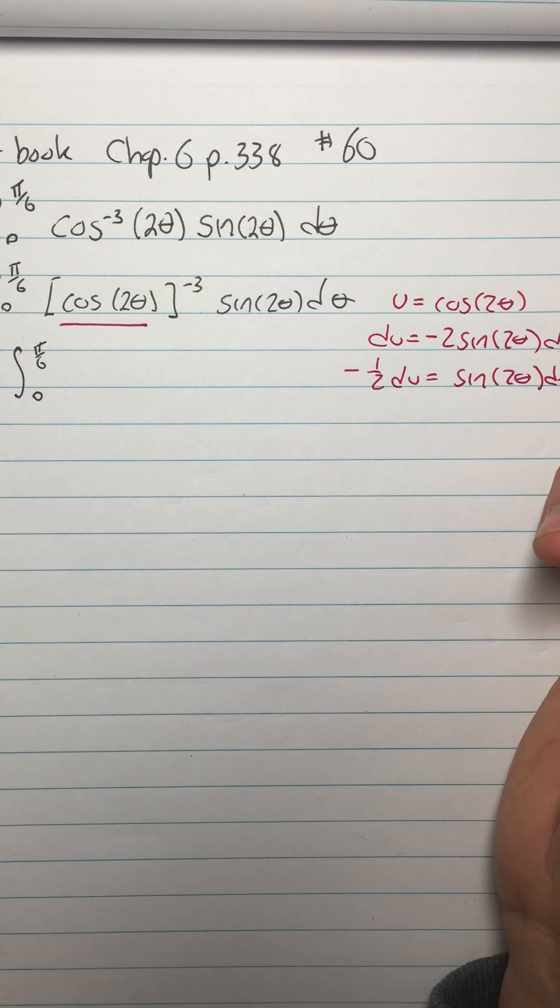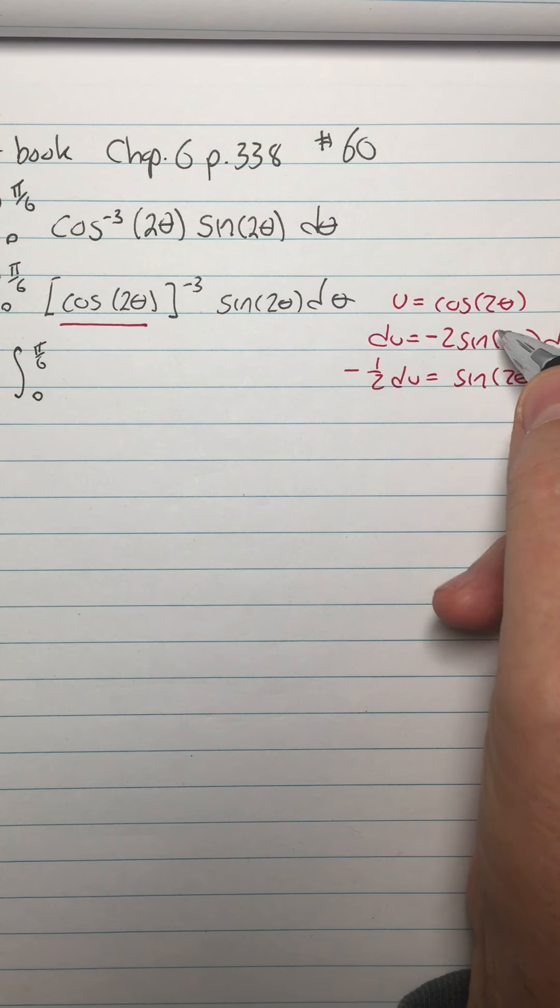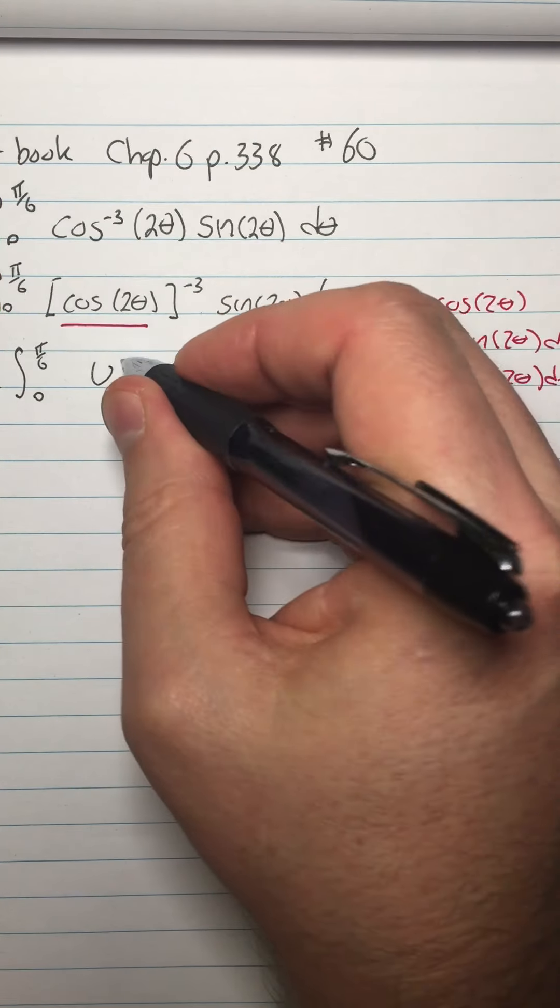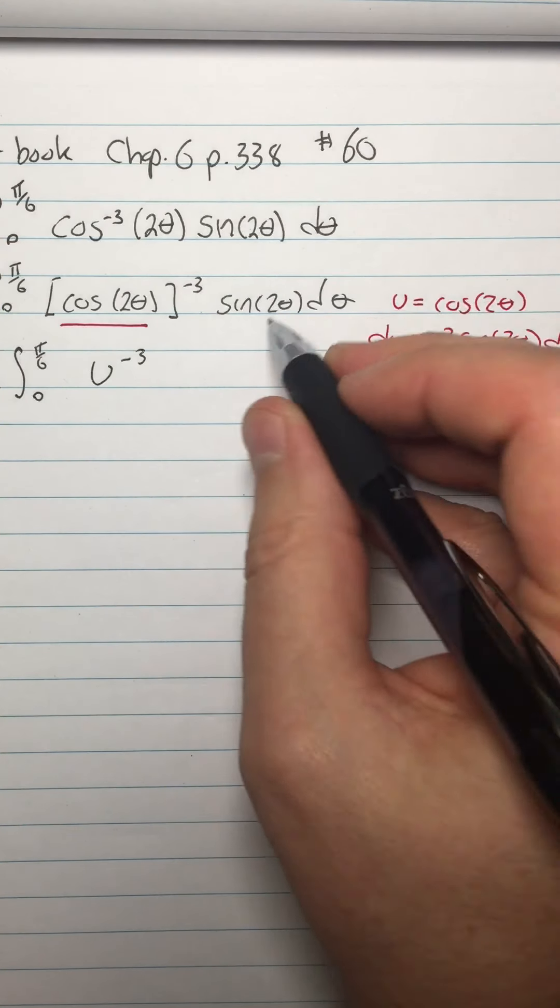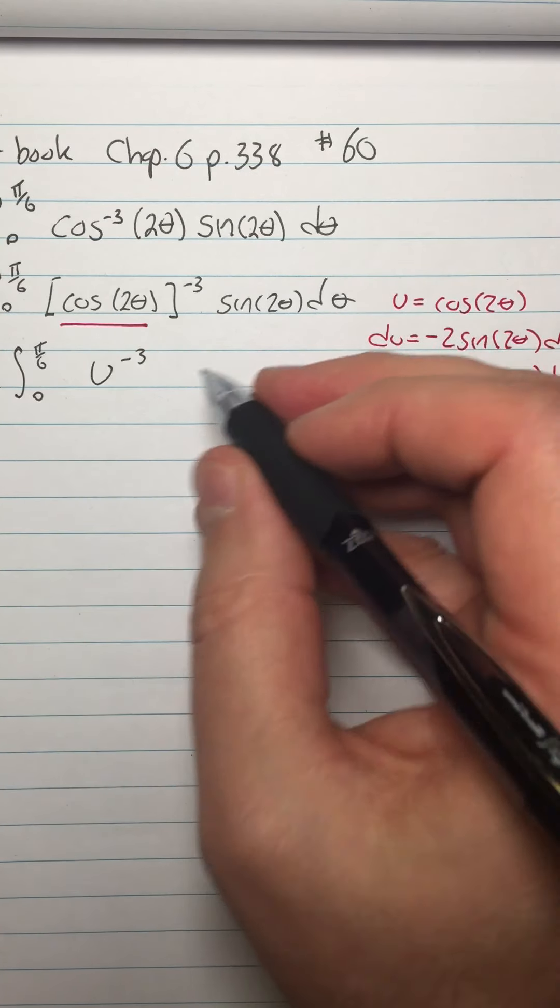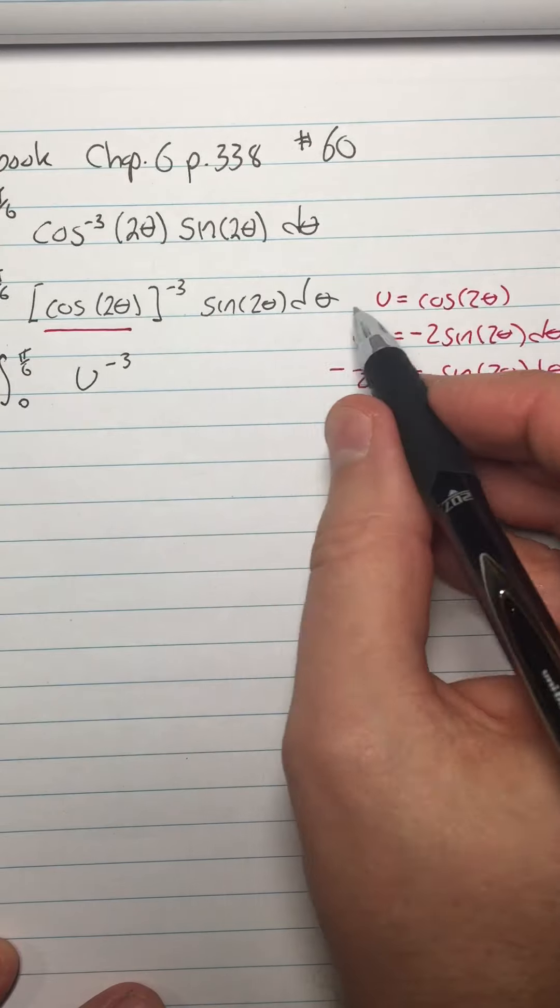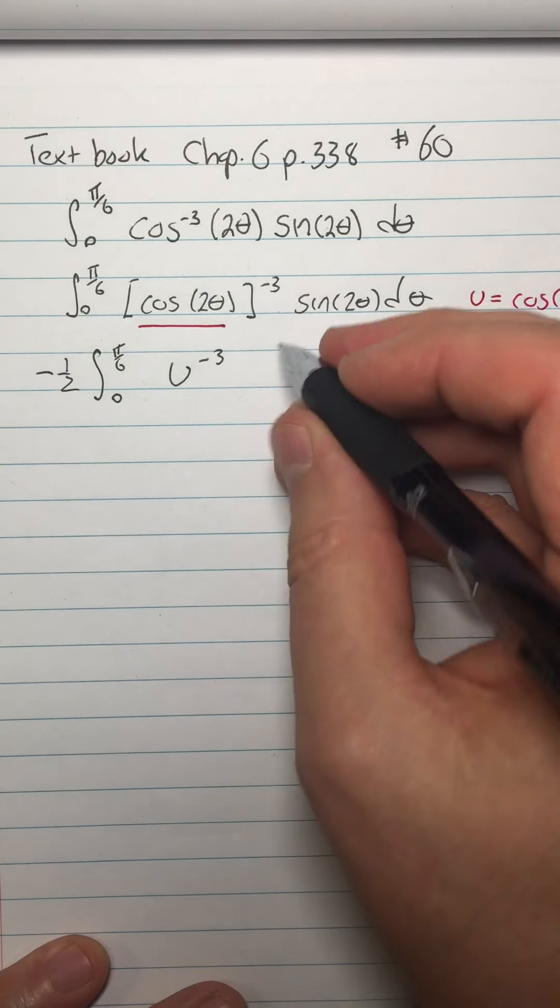All right, so let's see. So then my cosine of 2 theta is going to be just u. So I have u to the negative third power, because that's what it is. My sine of 2 theta d theta, that's just my du, and I put the negative 1 half out here. So the negative 1 half is out here for that negative 1 half du, and the sine 2 theta d theta matches this. So this is du.